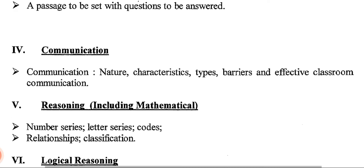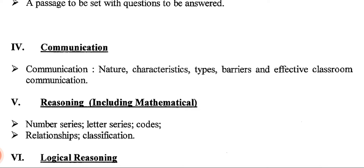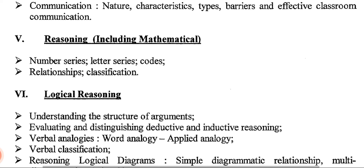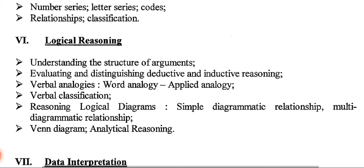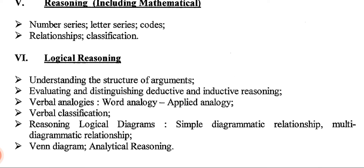Section five covers Reasoning including Mathematical questions — number series, letter series, codes, relationships, and classification. From this section, ten marks will come. Section six is Logical Reasoning, which includes: understanding the structure of arguments; evaluating and distinguishing deductive and inductive reasoning; verbal analogies; word analogy; applied analogy; verbal classification; logical diagrams; simple and multi-diagrammatic relationships; Venn diagrams; and analytical reasoning. It is a very comprehensive section that you have to deeply study.